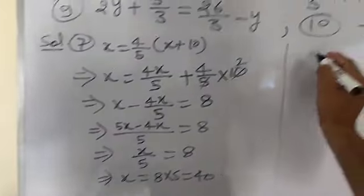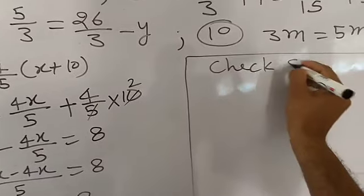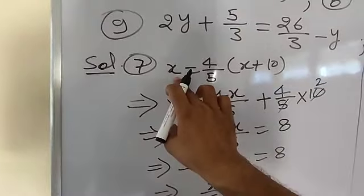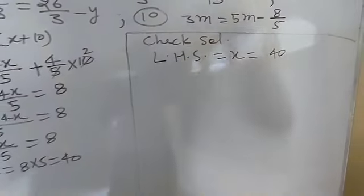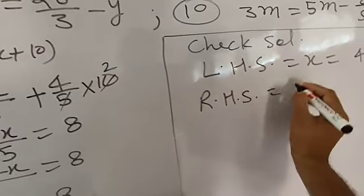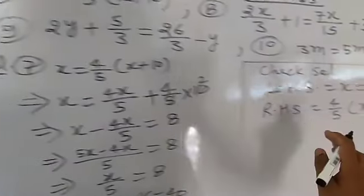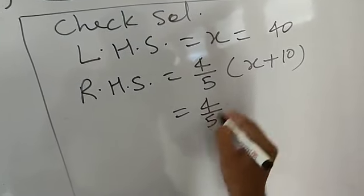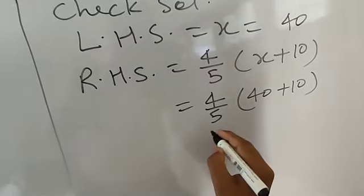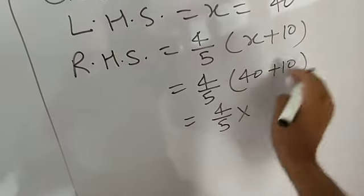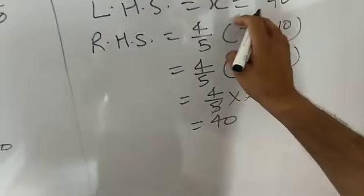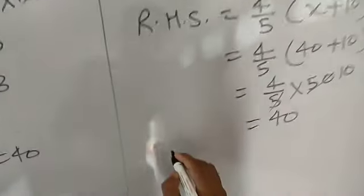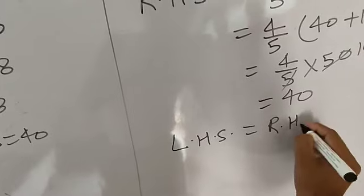Now I am going to check the solution. LHS equals x, and the value of x is 40, so the left hand side is 40. RHS is 4 by 5 into (x plus 10). Putting x equal to 40: 4 by 5 into (40 plus 10) equals 4 by 5 into 50. That is 4 into 10 equal to 40. LHS equals RHS, both are 40, so your solution is correct.